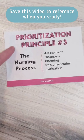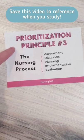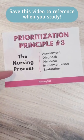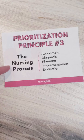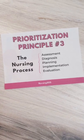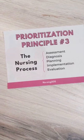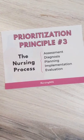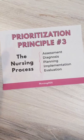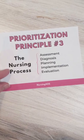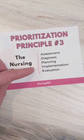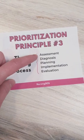All right. Prioritization principle number three for nursing school is the nursing process. Always be thinking about the nursing process when you go take your nursing school exams and of course when you're at clinical — basically always. The nursing process is ADPIE, so remember ADPIE.